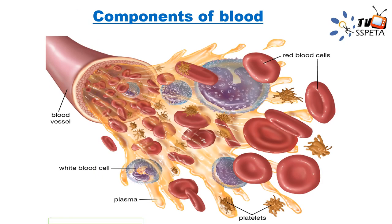We have completed the four components of blood. Here is an overview showing blood flowing out of a blood vessel. We can see the yellowish liquid which is plasma — everything is suspended in this liquid. We can also see white blood cells, platelets, and biconcave disc red blood cells. These are all the components found in blood.